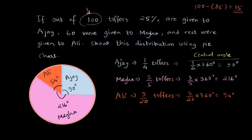And this is how we have drawn the pie chart showing the distribution of toffees that Ajay, Megha, and Ali received.